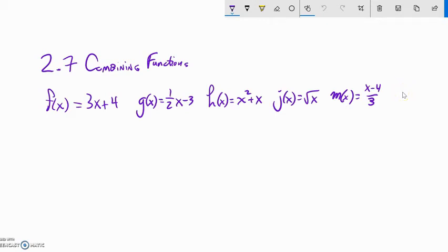This is Math 141, Section 2.7. We're going to talk about combining functions, putting these functions together. So here I have just a list of functions: f of x, g of x, h of x, and so on. If you remember this function notation, like f of x equals 3x plus 4, what this is saying is f of some input is 3 times that input plus 4. Or this j of x, j of some input is the square root of that input.